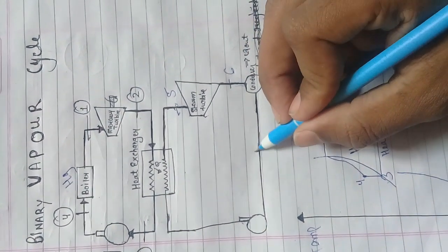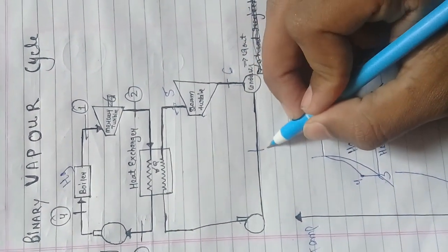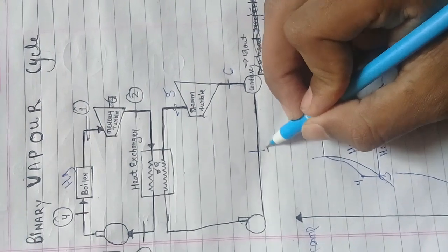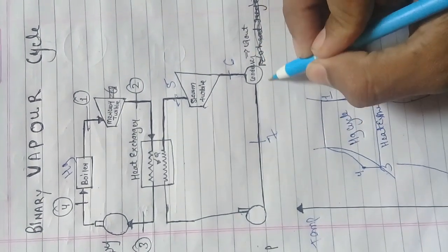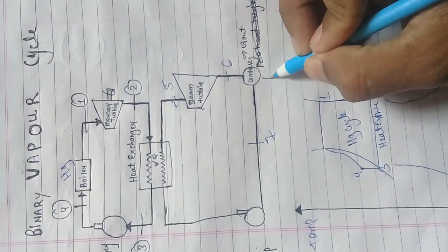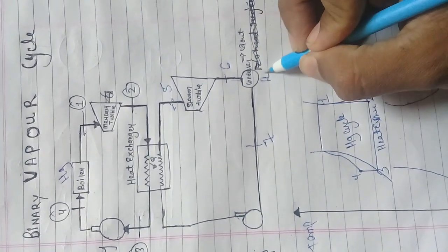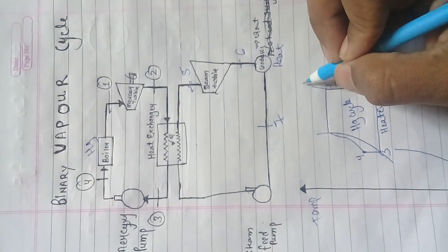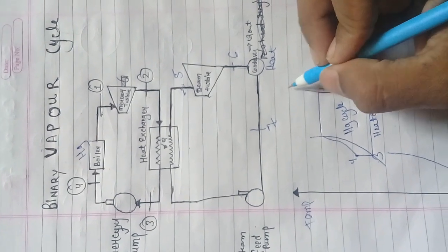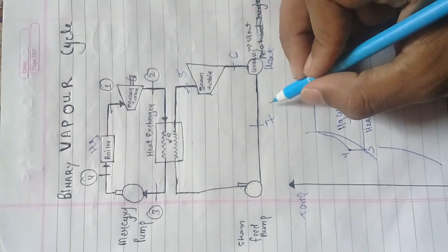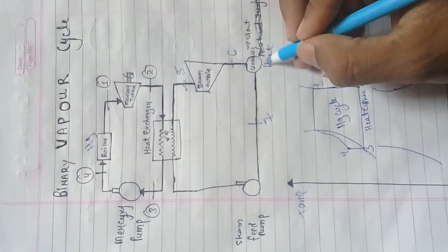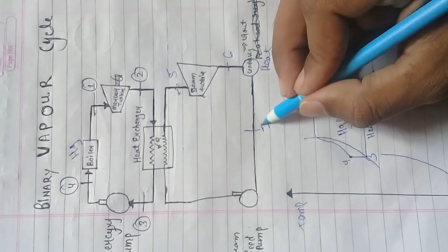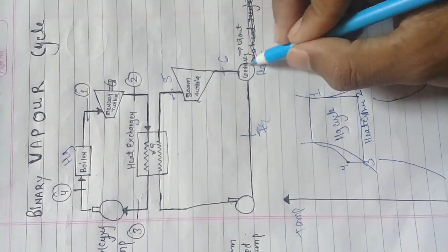Six to seven is the condenser work. The heat exchanger is being used here for the steam cycle.